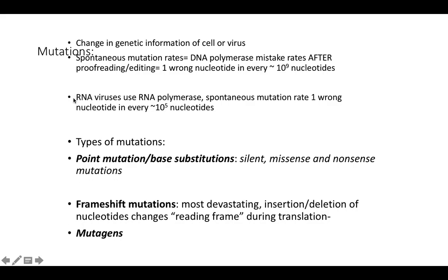RNA viruses have RNA genomes and must use RNA polymerase to copy them, and RNA polymerases don't proofread. So they have a really high spontaneous mutation rate — approximately one mutation in every 10^5 nucleotides. Two examples of RNA viruses we explored are the influenza virus and SARS-CoV-2, the pandemic coronavirus. Both influenza and coronaviruses have potential for high mutation rates because they are RNA viruses.